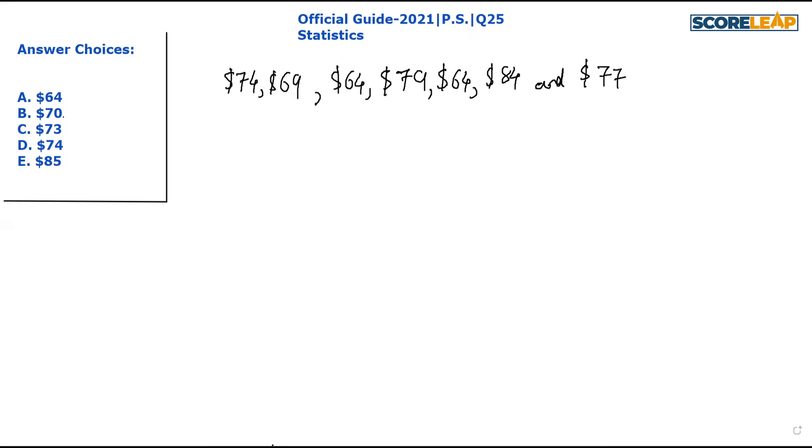We are given the weekly grocery bills of the Smith family over the past seven weeks, so we have a total of seven values for each of the seven weeks. The question asks: what was the Smith's average weekly grocery bill over the seven week period? We are simply asked to find the mean or the arithmetic average.